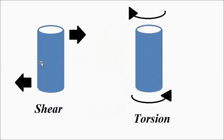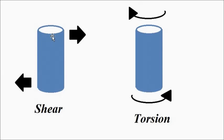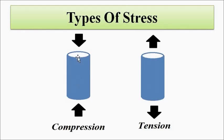Then we have the shear stress and the torsional stress. Shear stress we discussed in the fluid mechanics section — the shear stress on fluids — and similar to that, it acts here as well. Torsional stress is a kind of twisting or rotating stress in opposite directions. Both of these stresses act in opposite directions in a parallel manner. So these are the five types of stresses that a material comes in contact with.